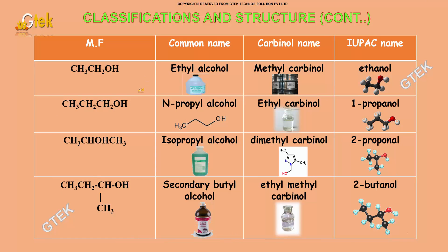These are the general classification and structures. The molecular formula CH3CH2OH has a common name ethyl alcohol, carbinol name methylcarbinol, and the IUPAC name ethanol. Similarly, the molecular formula CH3CH2CH2OH has a common name N-propyl alcohol, carbinol name ethylcarbinol, and IUPAC name 1-propanol.